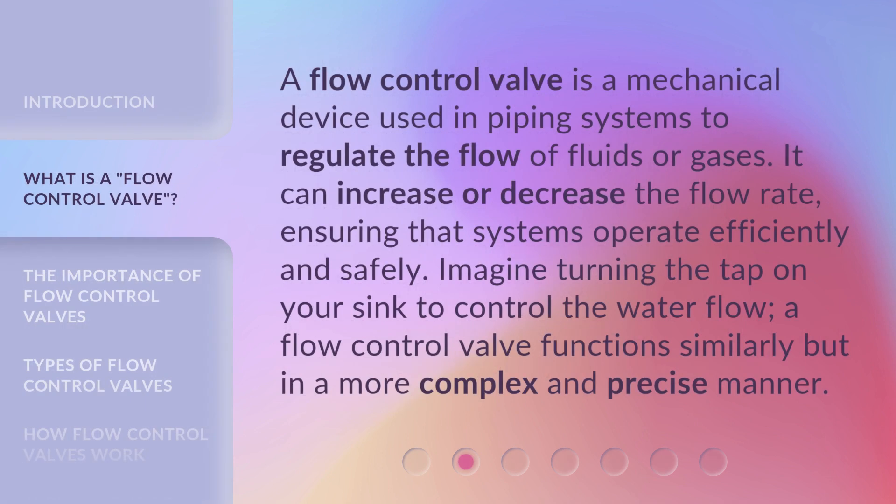A flow control valve is a mechanical device used in piping systems to regulate the flow of fluids or gases. It can increase or decrease the flow rate, ensuring that systems operate efficiently and safely. Imagine turning the tap on your sink to control the water flow — a flow control valve functions similarly, but in a more complex and precise manner.